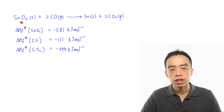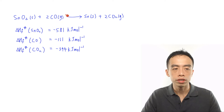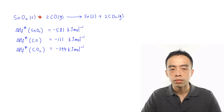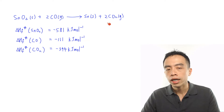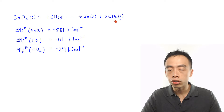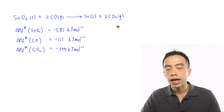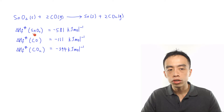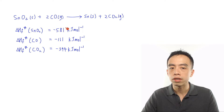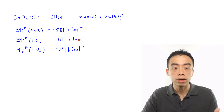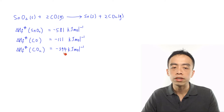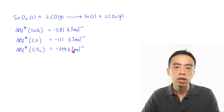Let's have this example involving this particular reaction: tin oxide plus 2 carbon monoxide to give tin element and 2 carbon dioxide. We want to determine the enthalpy change of this reaction, given that the enthalpy change of formation of tin oxide is minus 581 kJ per mole, carbon monoxide is minus 111 kJ per mole, and CO₂ is minus 394 kJ per mole.